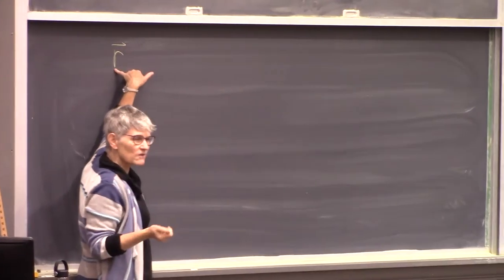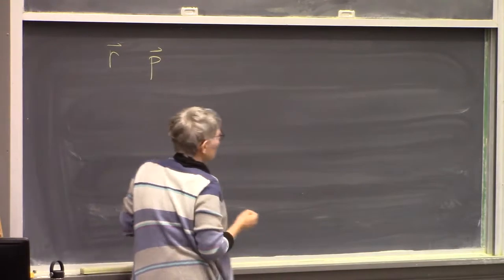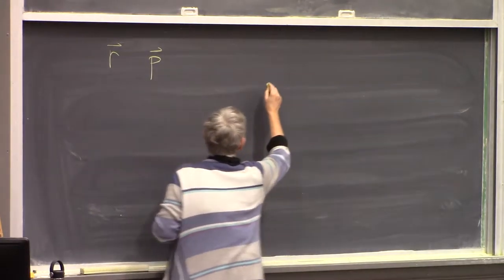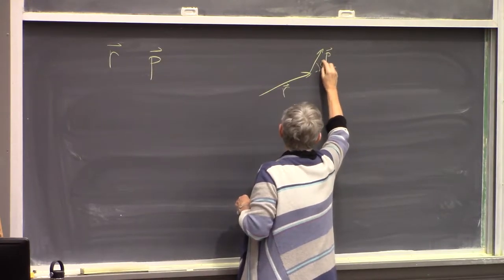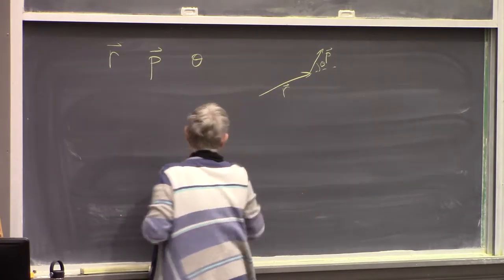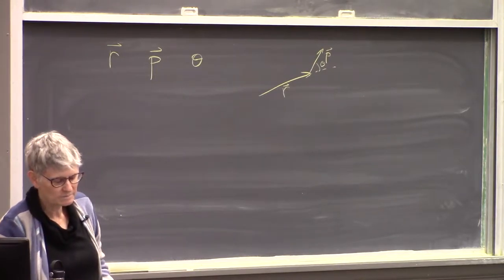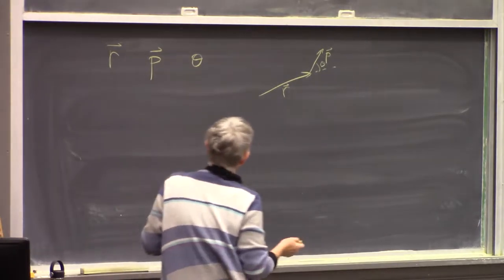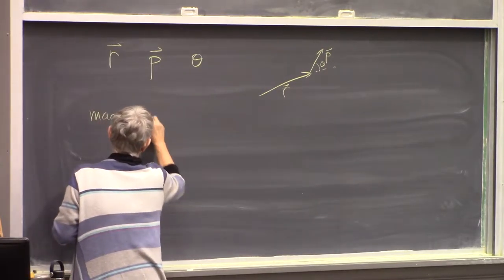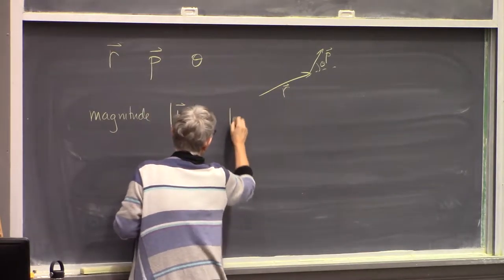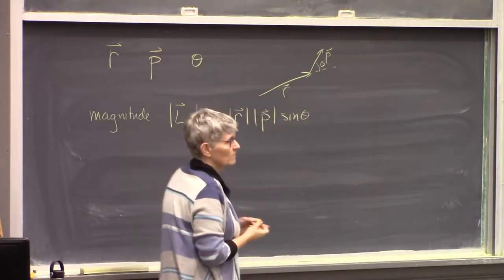We want angular momentum to include something about the location of the object relative to some point, something about its momentum, and something about the relationship between them — possibly some function of the angle between them. It turns out the magnitude of angular momentum is: magnitude of r times magnitude of p times sine of the angle theta.